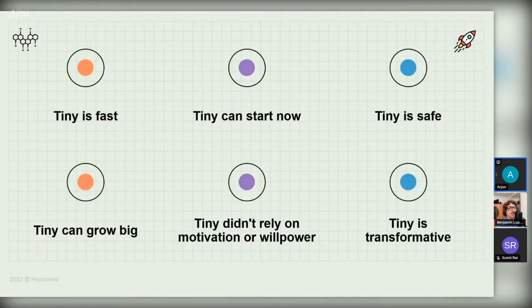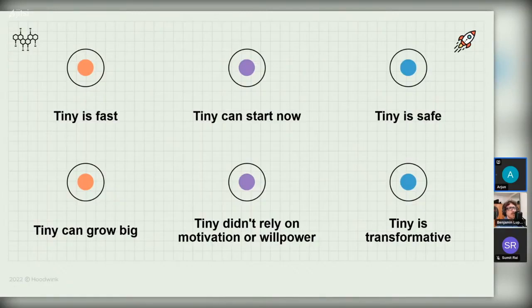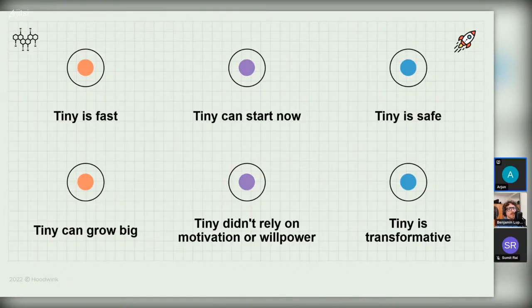So why tiny? First, tiny is fast — one of the main complaints when trying to create new habits is that it takes a lot of time. Tiny habits mitigates that problem — you don't necessarily need a lot of time. Tiny can start now — you don't procrastinate a tiny habit precisely because it's very easy to do. Tiny is safe — for example, you could buy a yoga mat or you could buy a ticket to India and enroll in a yoga class, which is risky in terms of time and money. Tiny habits are safe in that sense. Next, tiny can grow big — it doesn't need to remain tiny forever. Tiny doesn't rely on willpower, which is the exact opposite of the intense motivation approach. And finally, tiny is transformative.